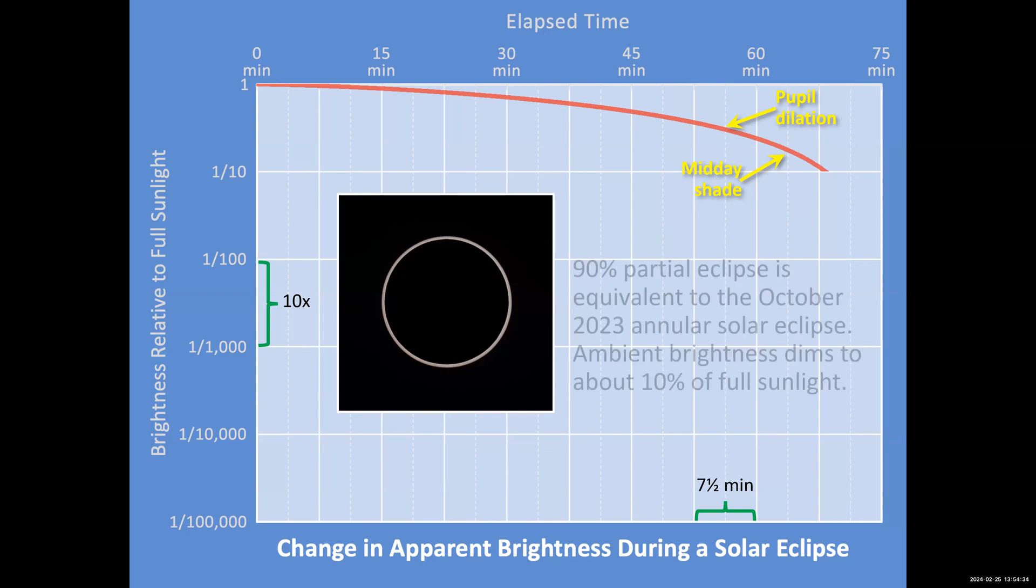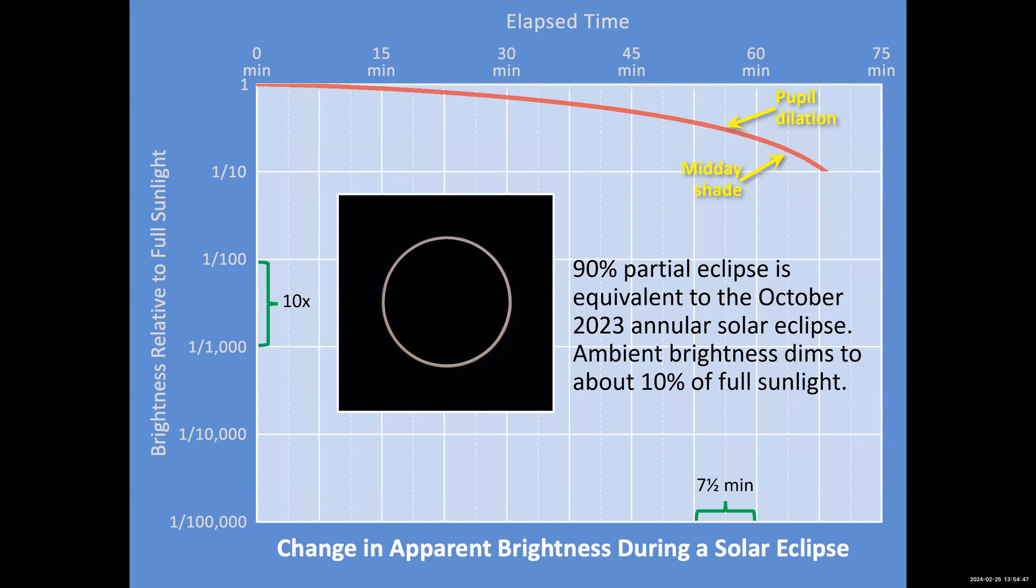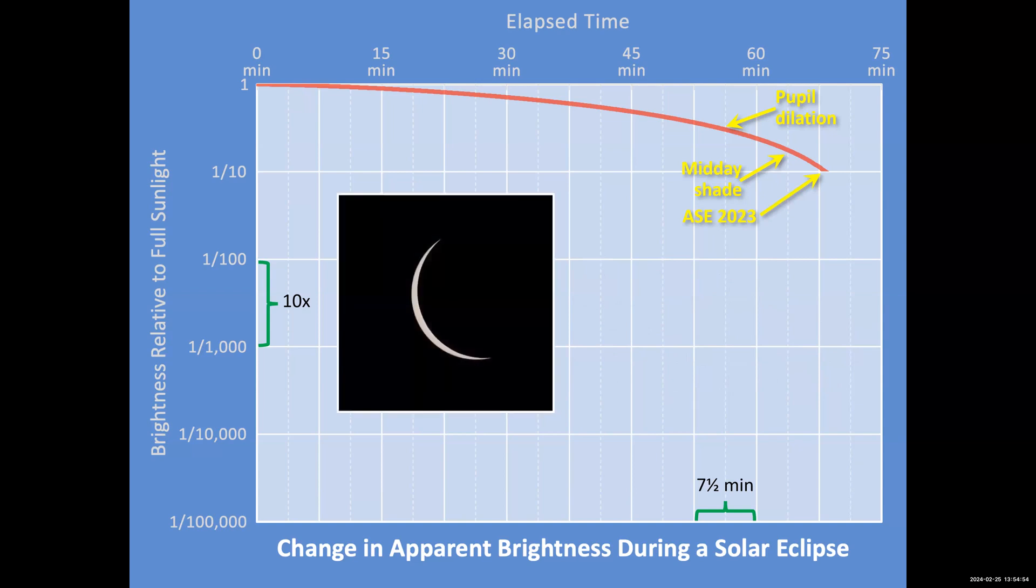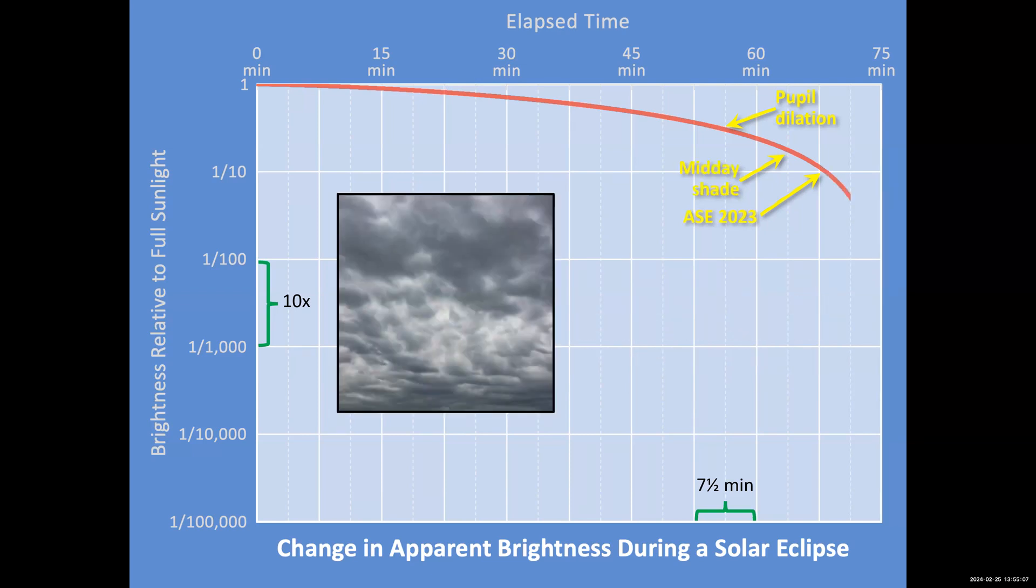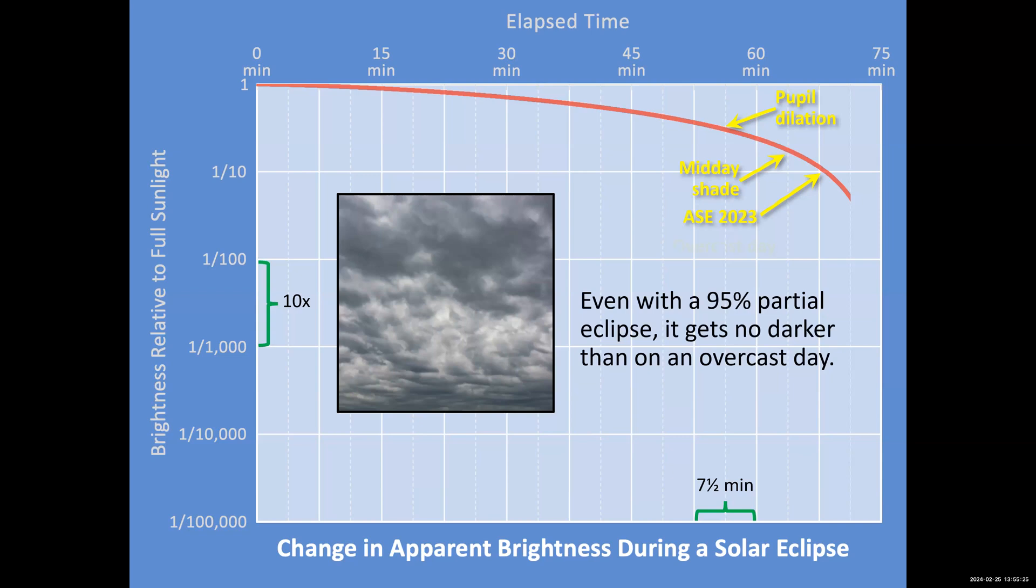Here we've got to a 90% eclipse. This is actually what we got in the October 2023 annual eclipse. The moon blocked out 90% of the sun. That still means there was 10% of the sun still showing, and that's pretty bright. That thin sliver of the sun still provides a lot of light. As we get to over an hour, about 70 minutes into the eclipse, it's only as bright as an overcast day. At 95%, it really is an overcast day darkness.